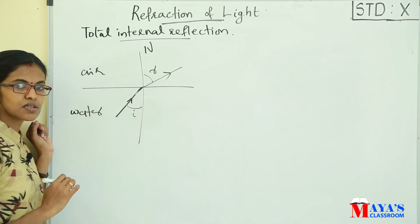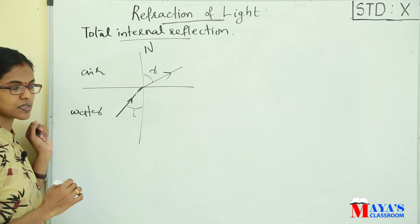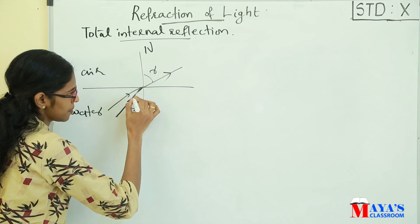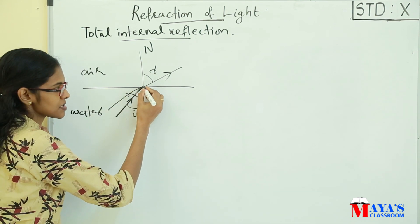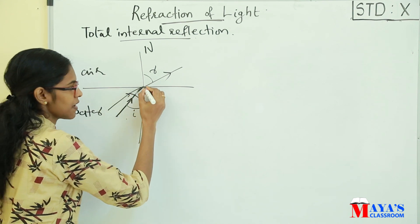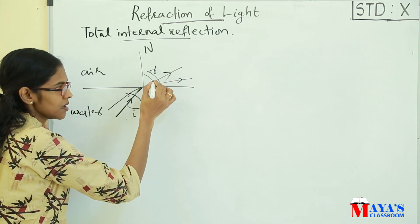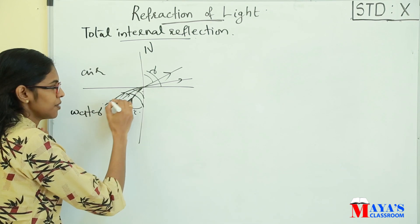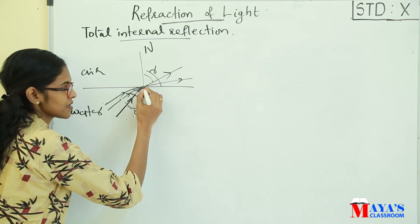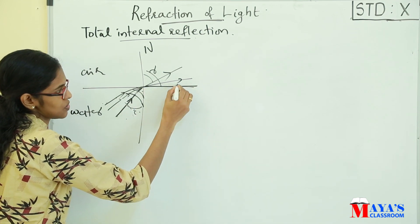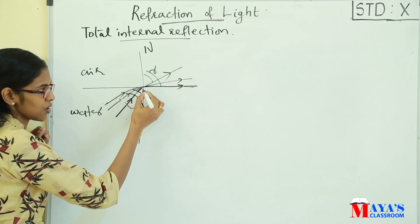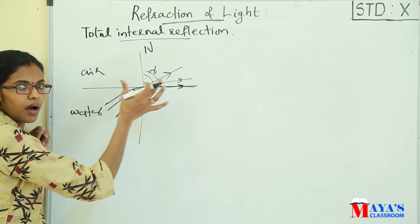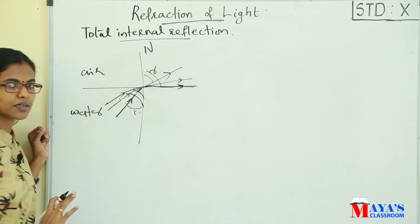If we look at the angle of incidence here, we find the refracted ray is away from the normal. Then we see the angle of incidence increases. When the refracted ray is parallel to the surface of separation, that refracted ray will not cross the surface of separation.